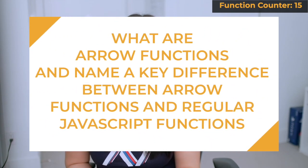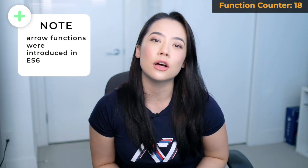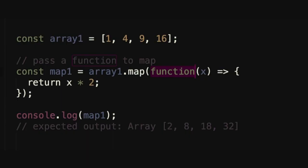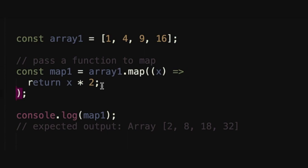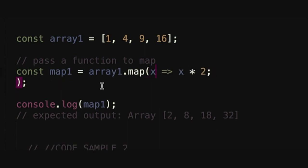Number two: what are arrow functions and name a key difference between arrow functions and regular JavaScript functions? Arrow functions were introduced in ES6 and are a shorter, more concise way to write functions. In an arrow function, we can remove the function keyword, and if the function consists of only a return statement with a single line of code, we can remove the curly braces and the return keyword, since the arrow function will implicitly return. If the function only has one argument, we can even remove the parentheses.